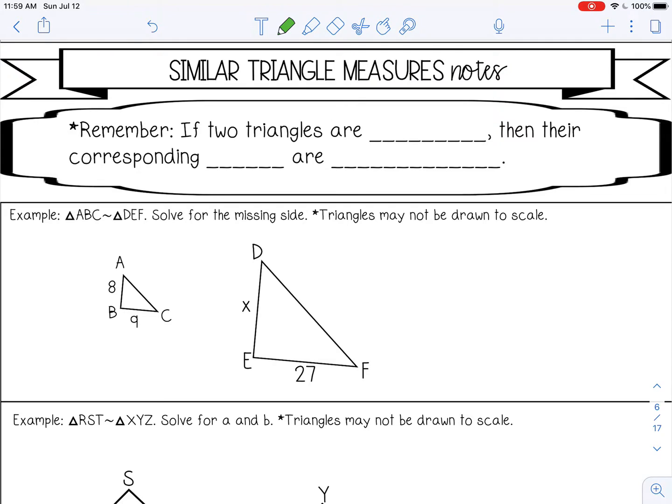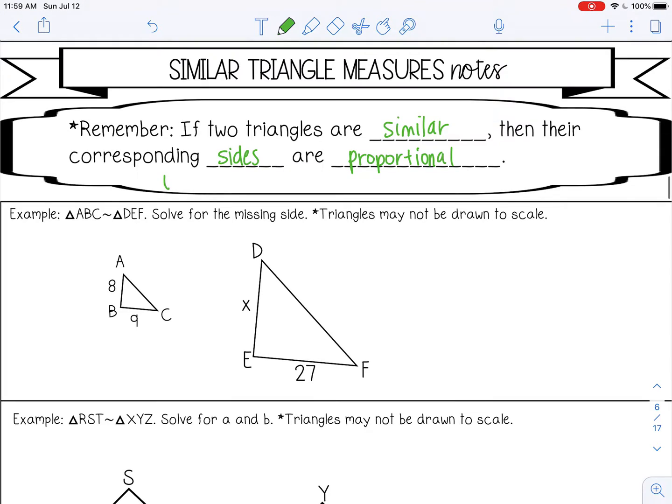Remember, if two triangles are similar, then their corresponding sides are proportional. And also remember, corresponding angles are equal. You may want to make a little note.